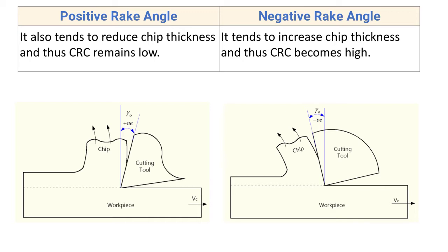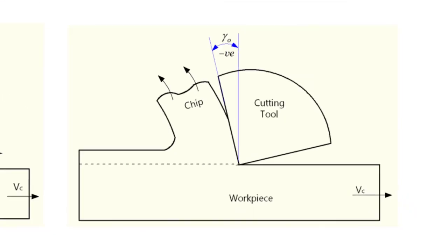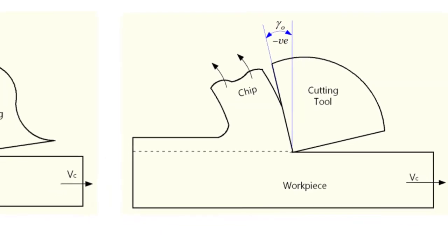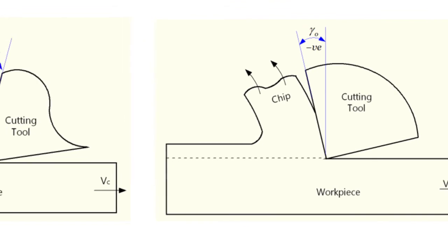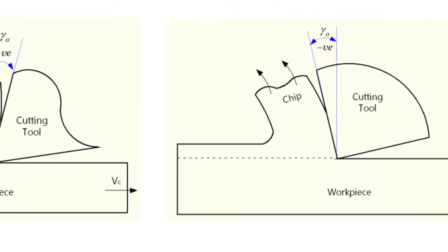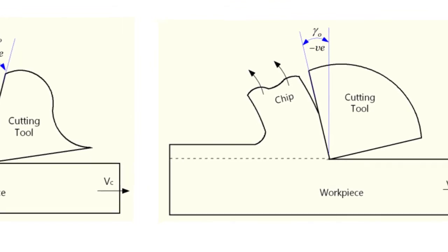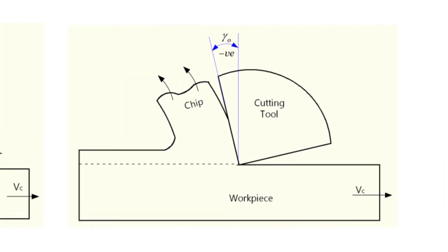For negative rake angle, it tends to increase the chip thickness and thus CRC becomes high. In the case of negative rake angle, the chip thickness is high, and as the chip thickness is high, the CRC will also be high with negative rake angle.